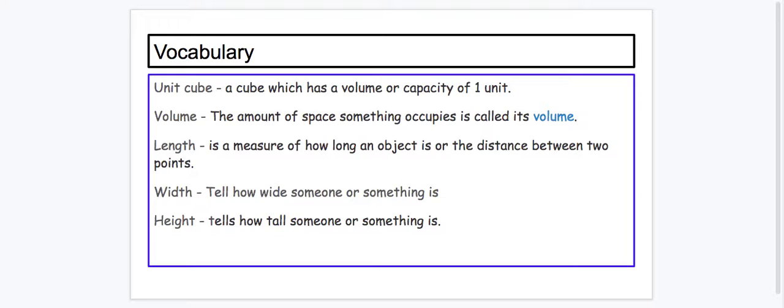Volume: the amount of space something occupies is called its volume. Length: it's a measure of how long an object is or the distance between two points.